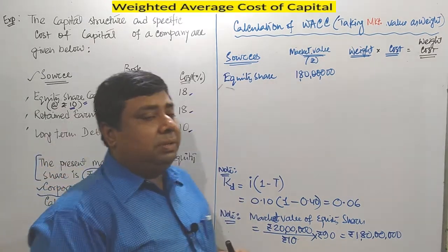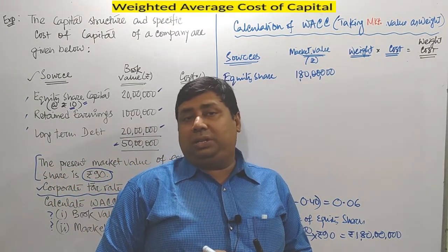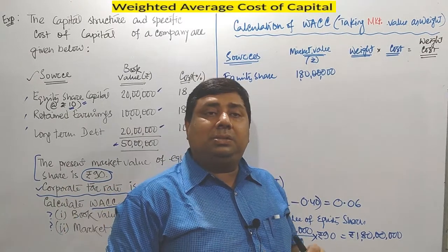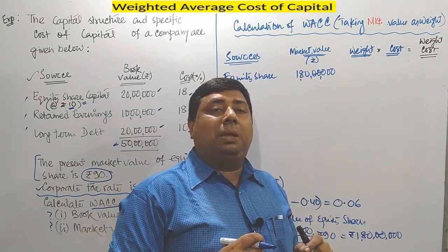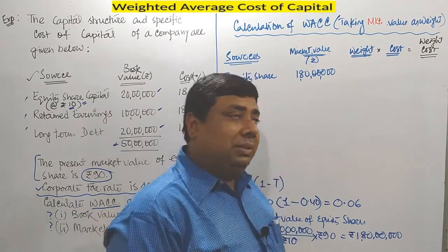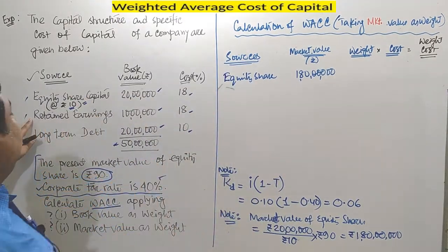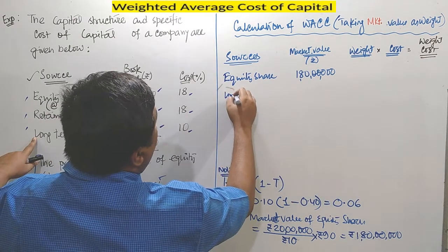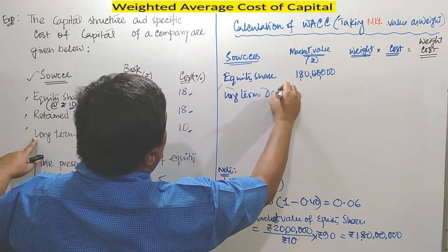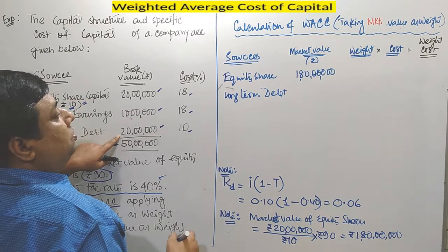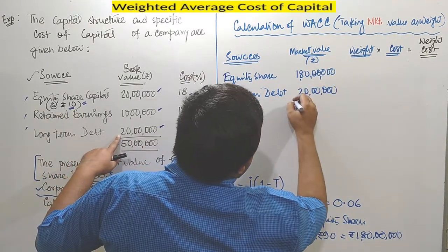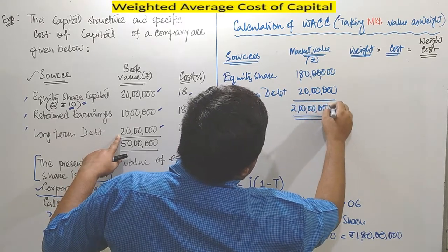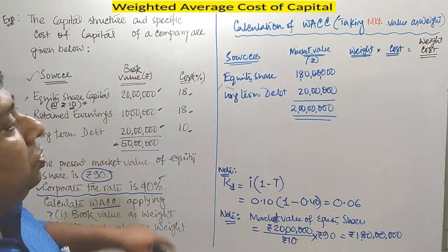Remember, under the market value method we do not consider reserve and surplus separately — it is already part of the market value, so we avoid retained earnings in WACC under market value. The remaining item is long-term debt, which is Rs. 20 lakhs. So total capital under market value is Rs. 2 crore.